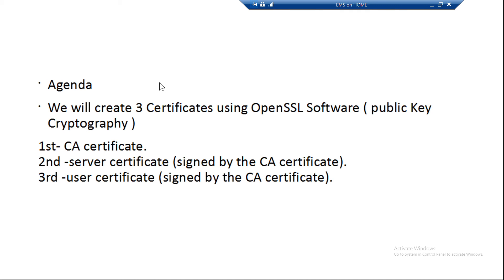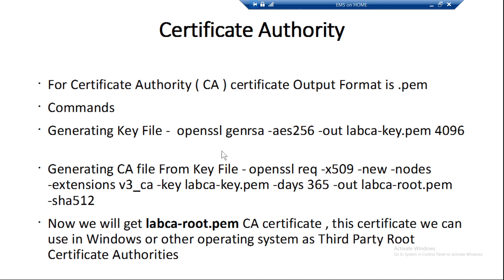For the CA certificate, we have to create two files. The first is the key file, using the RSA algorithm with AES-256 password encryption. The key size is 4096 bits — this depends on your application; you can also use 2048 or 1024. Now we'll go to the command prompt.